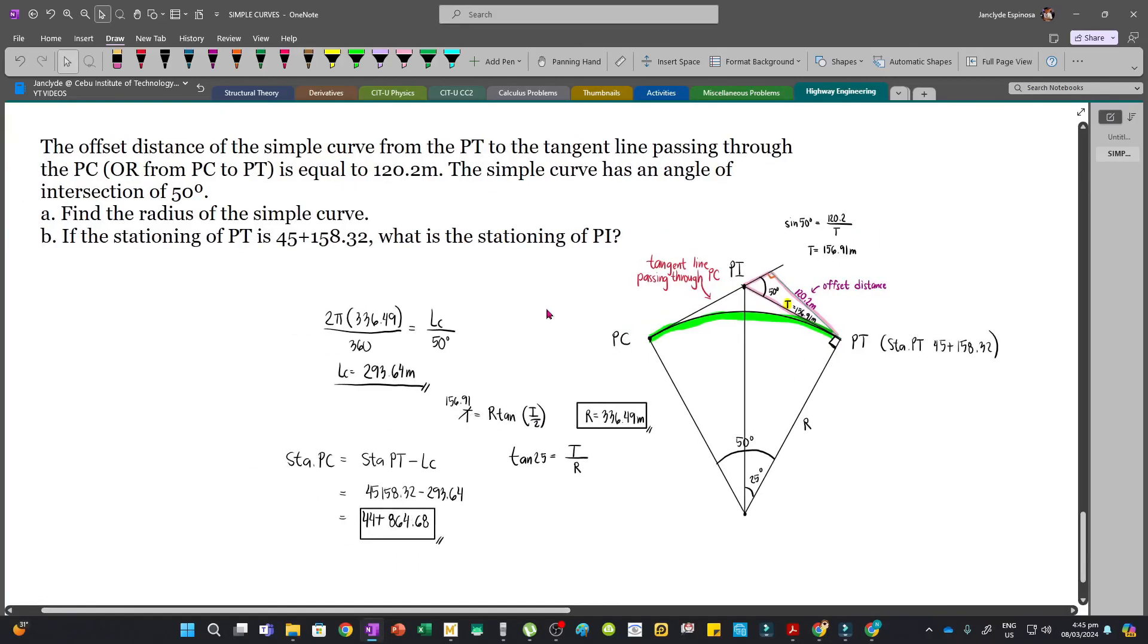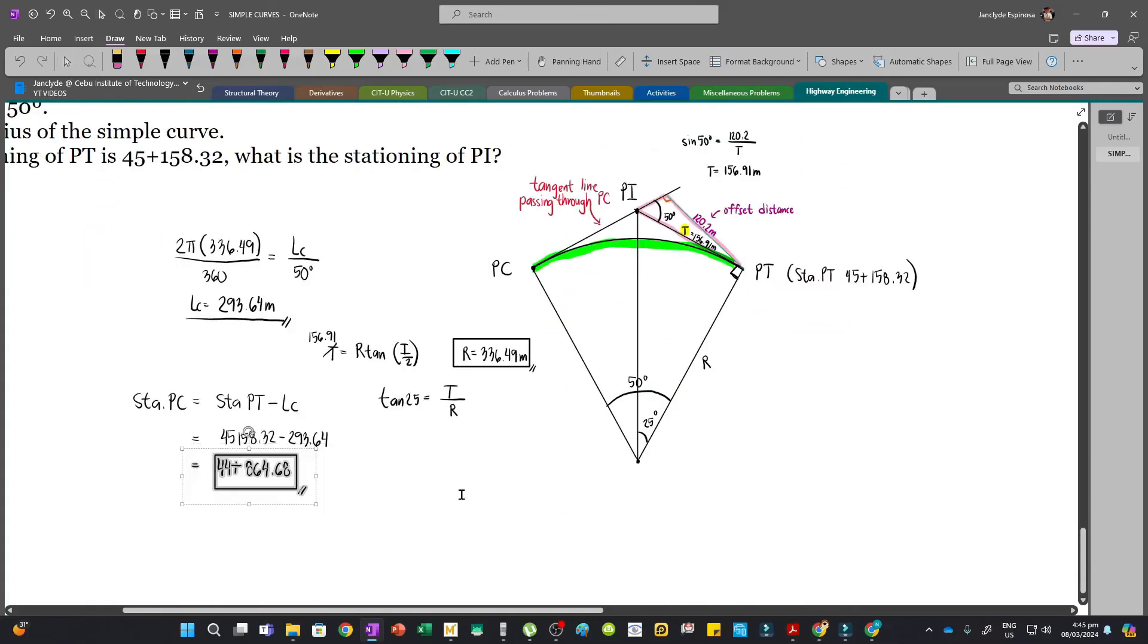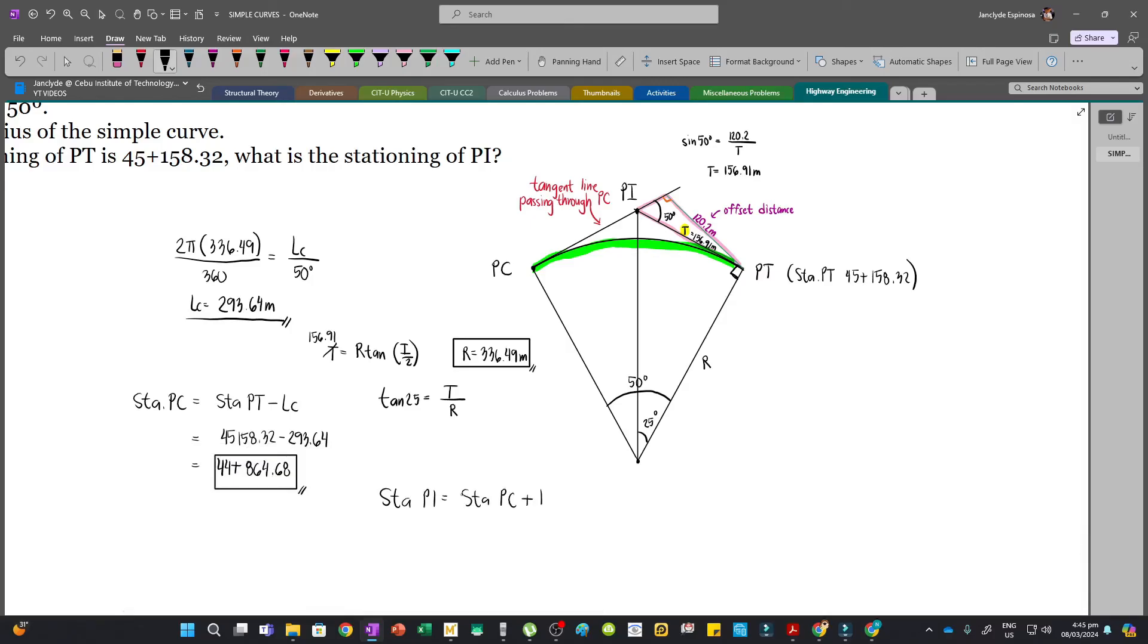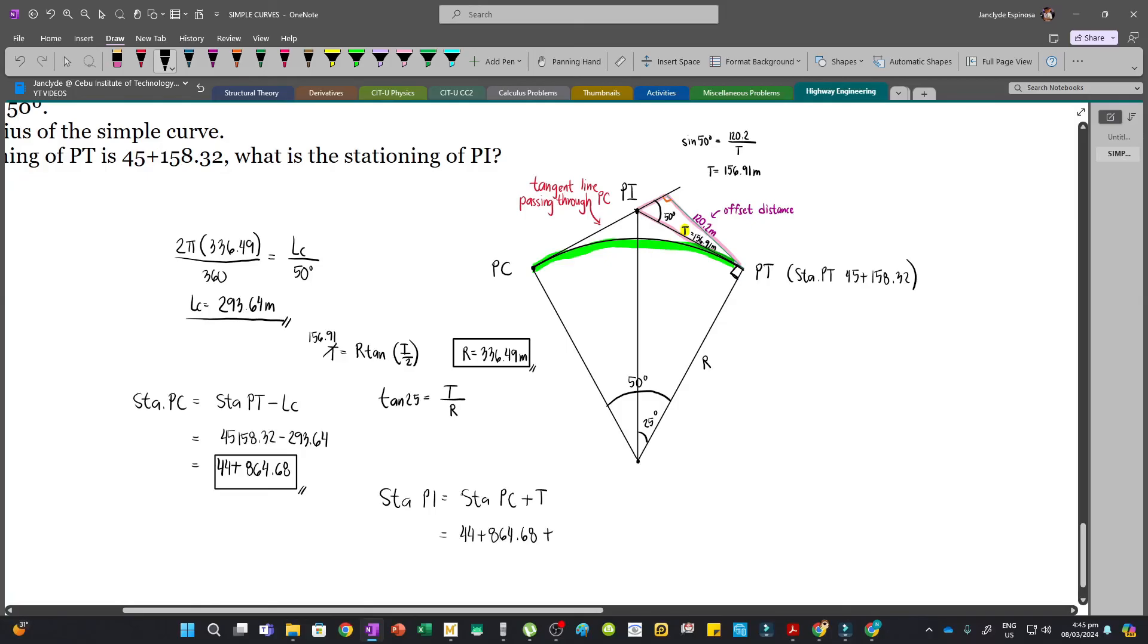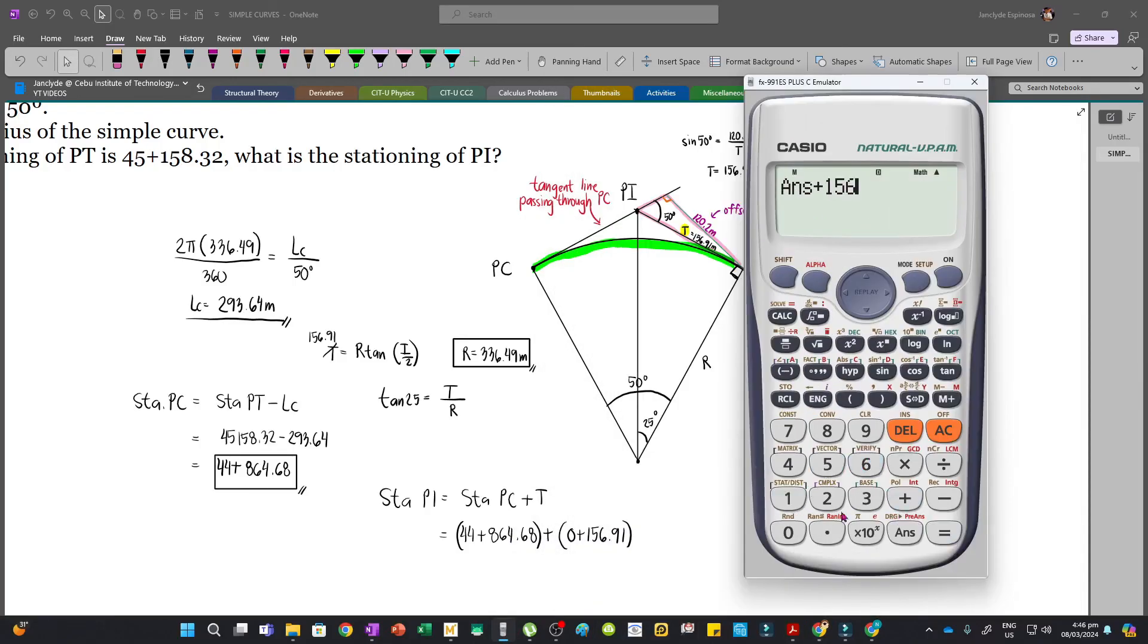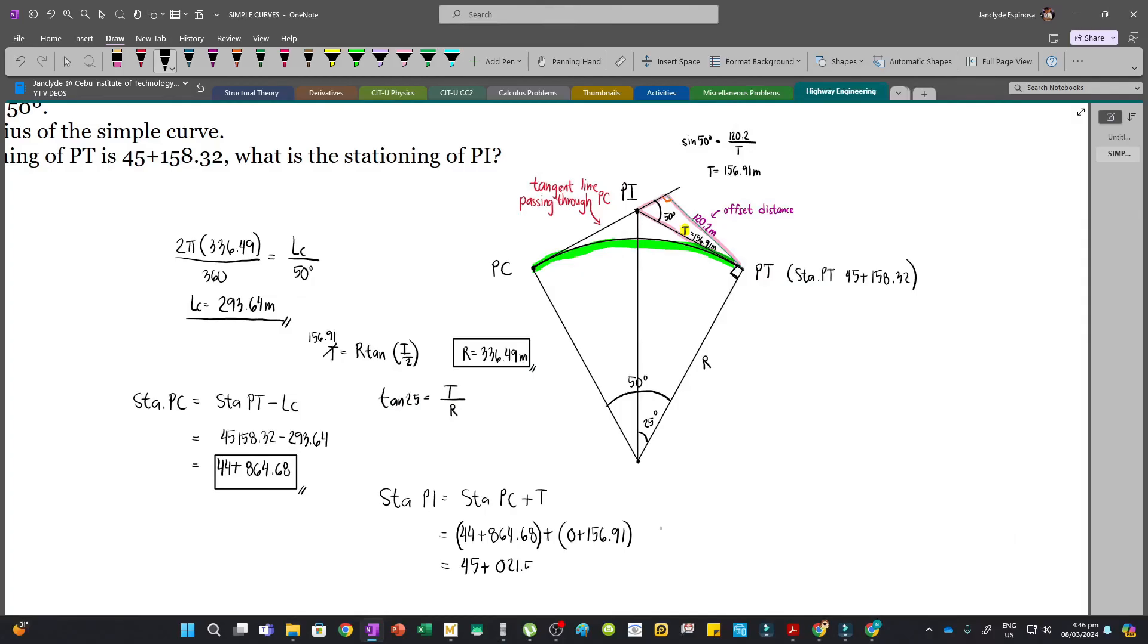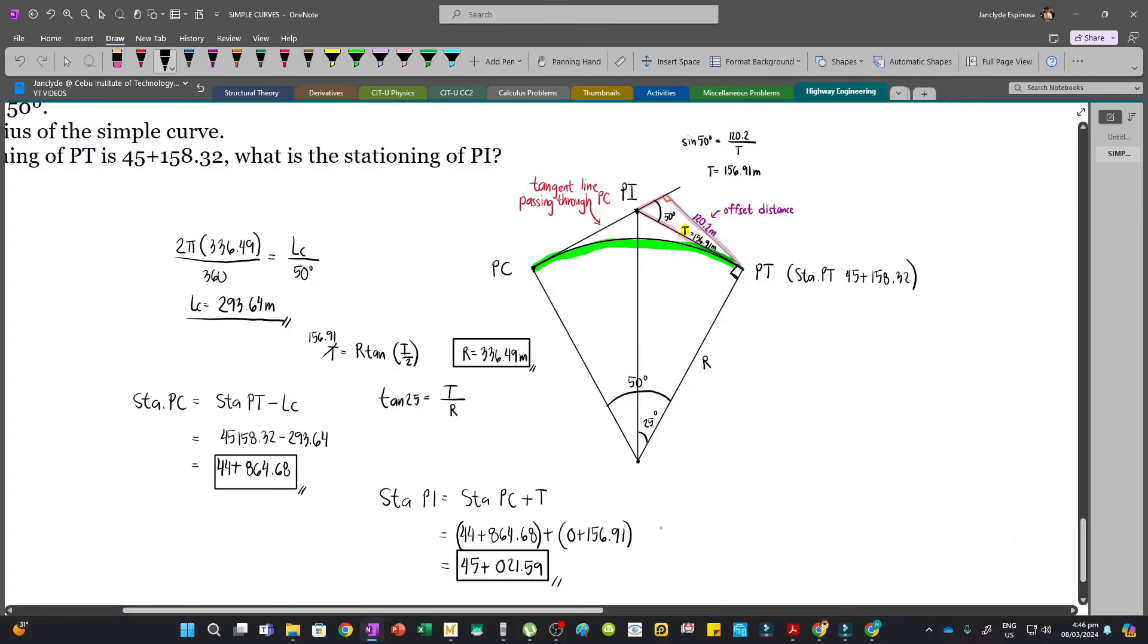And so to get the stationing of PI, since we know the tangent distance which is 156.91, we'll just add that. The stationing of PI is the stationing of PC plus the tangent distance. So we have 44 plus 864.68 plus 156.91. By the way, this is essentially 0 plus 156.91. So adding both, we have this value and then plus 156.91. So we have 45 plus 021.59. This is the stationing of PI which is at this point.